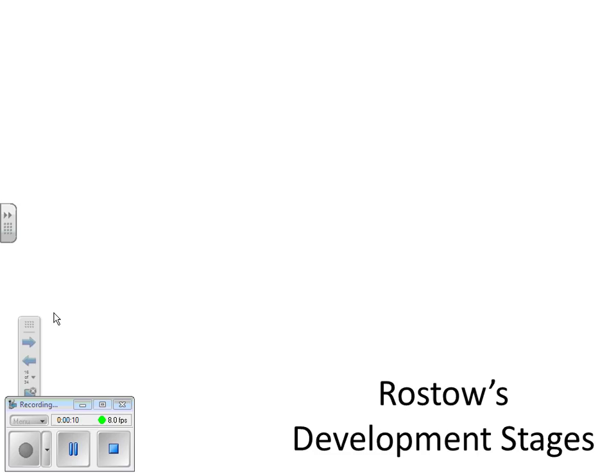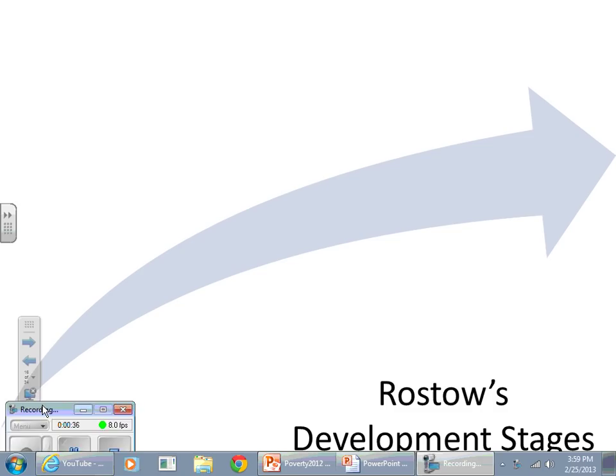All right, guys, welcome back. This is development lecture number three. This one is actually in your book, so I'm not going to spend a great deal of time on it. However, this is a developmental theory. We just had the modernization approach, which was nice in theory but certainly had its flaws. Rostow's theory is still considered by quite a few people, so we're going to talk about this and the idea of using international trade to sort of jumpstart a country's economy.